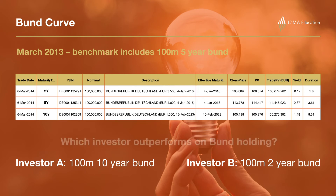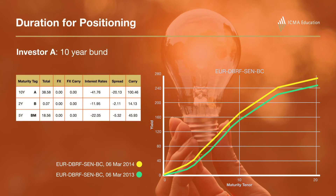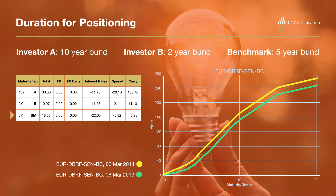We ask the question: which investor outperforms on the Bund holding? Many people will say that because we're expecting rates to rise — and indeed they do rise — investor B who bought the two-year Bund outperforms. But actually, when we look at the performance over the year, investor A in the 10-year Bund earns 38.5 basis points, whereas investor B in the two-year Bund earns only 0.07 basis points — almost nothing. The benchmark earns 18.5 basis points over the year. So investor A actually outperformed, even though we thought investor B would.